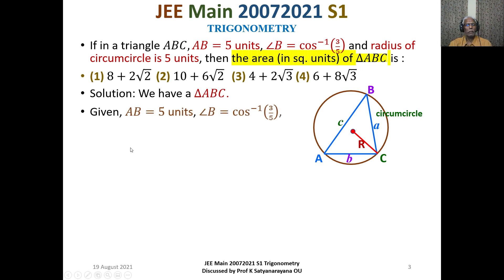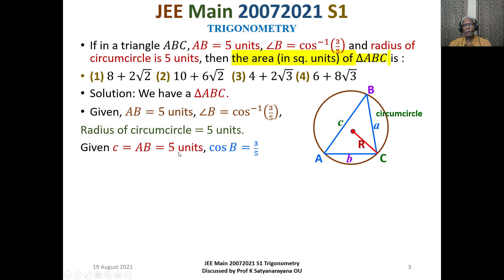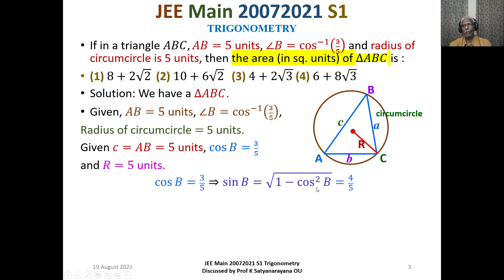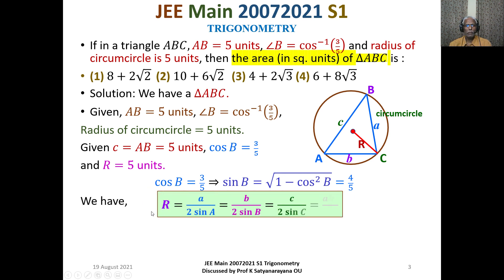What is given: lowercase c is equal to 5 units, angle B is equal to cos inverse of 3 by 5, which implies cos B is equal to 3 by 5, and capital R is equal to 5 units. Having known cos B, we can find sin B: sin B equals the square root of 1 minus cos squared B. Substituting cos B = 3 by 5 and simplifying, we get sin B = 4 by 5.